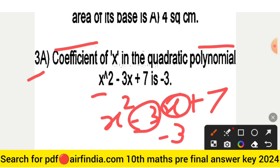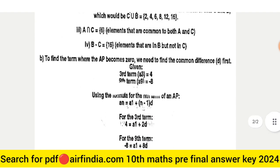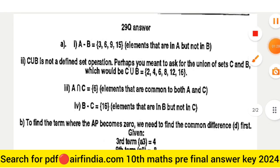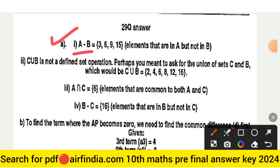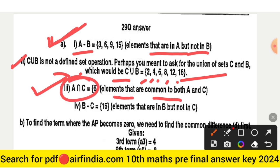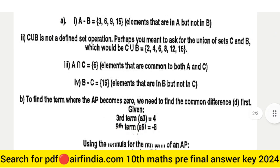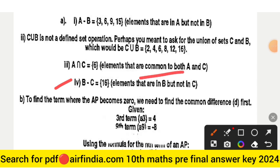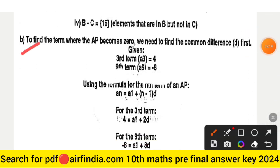Question 29A answer: A - B = {3, 6, 9, 5} (elements that are in A but not in B). C ∪ B is the union of set C and B which equals {2, 4, 6, 8, 12, 16}. A ∩ C means elements that are common to both A and C. B - C means elements that are in B but not in C, which is {16}.